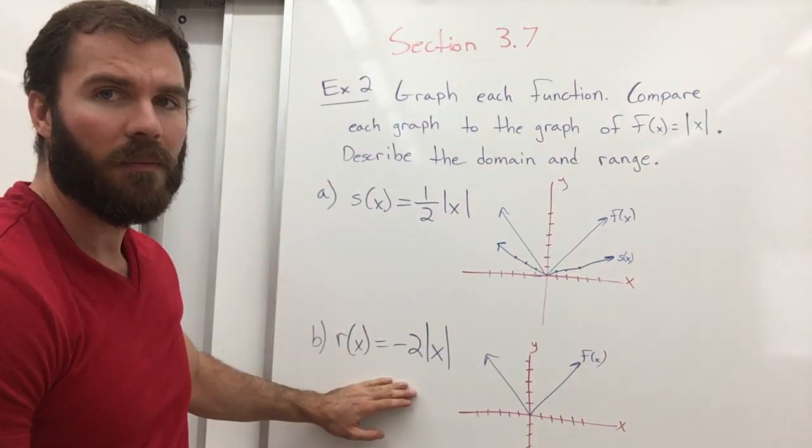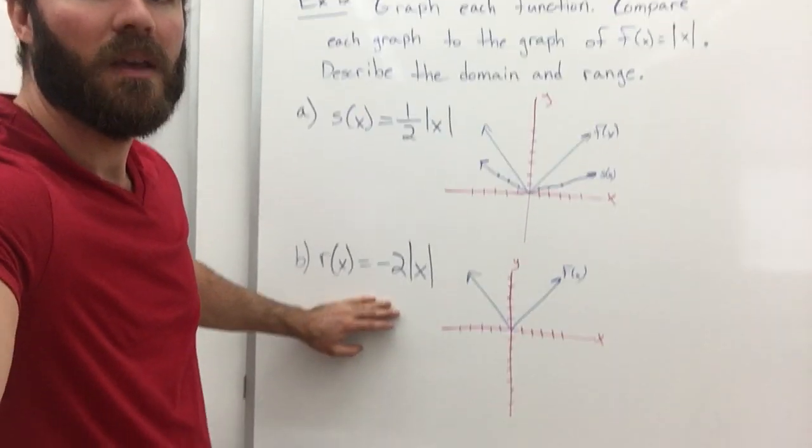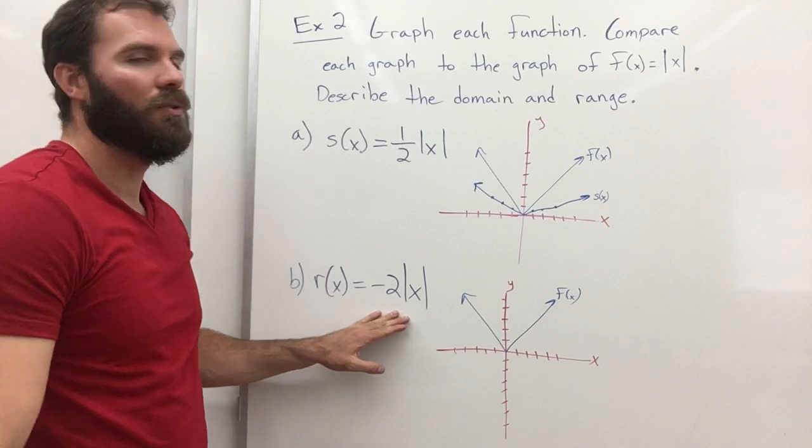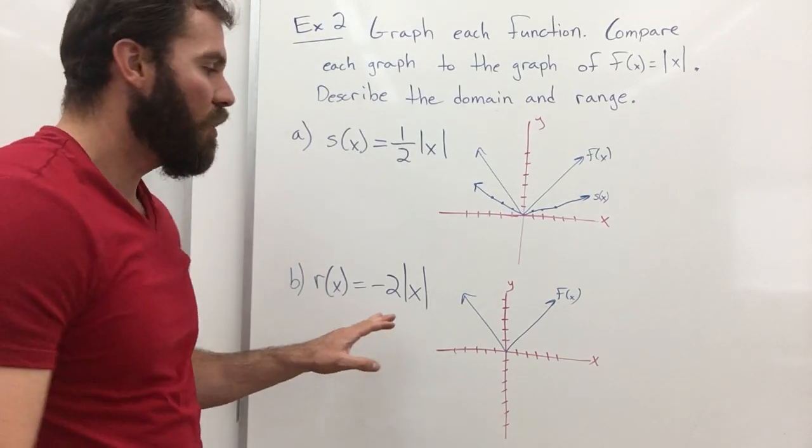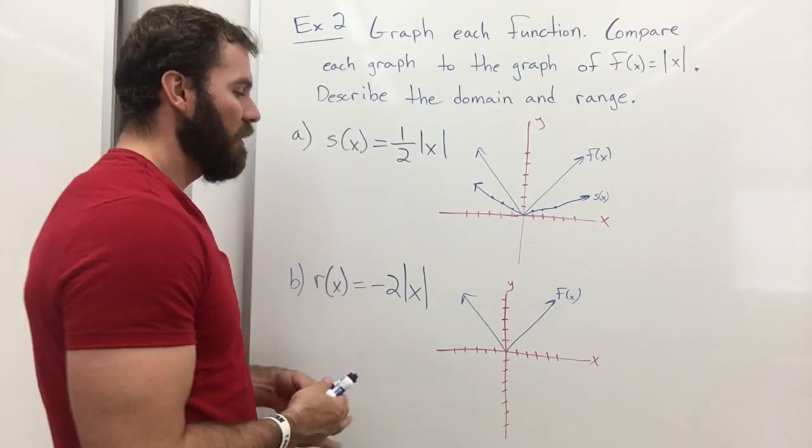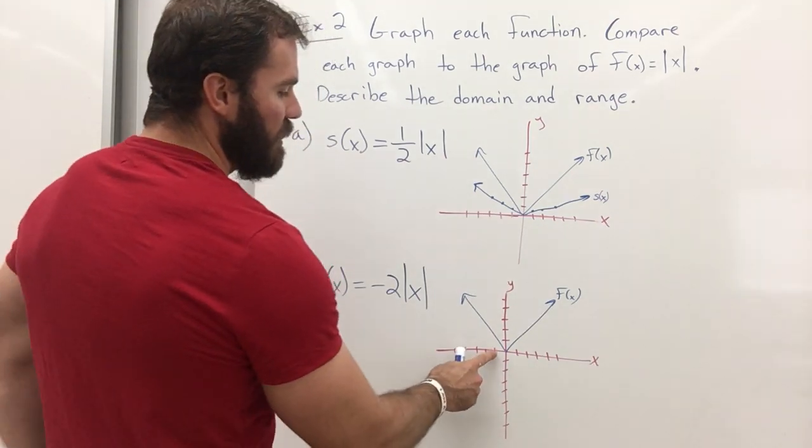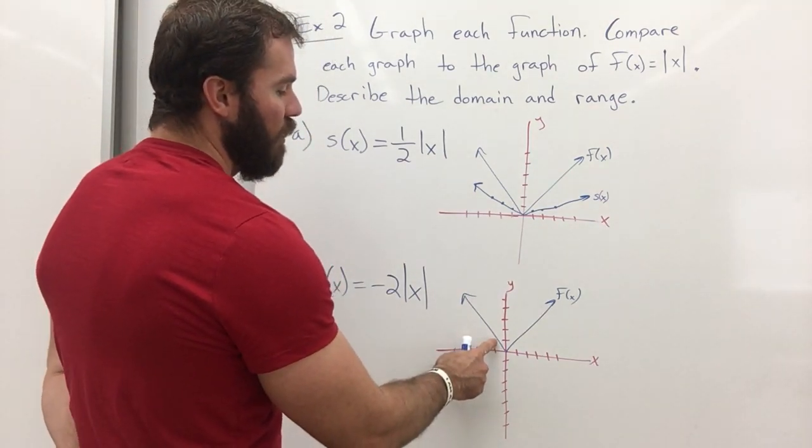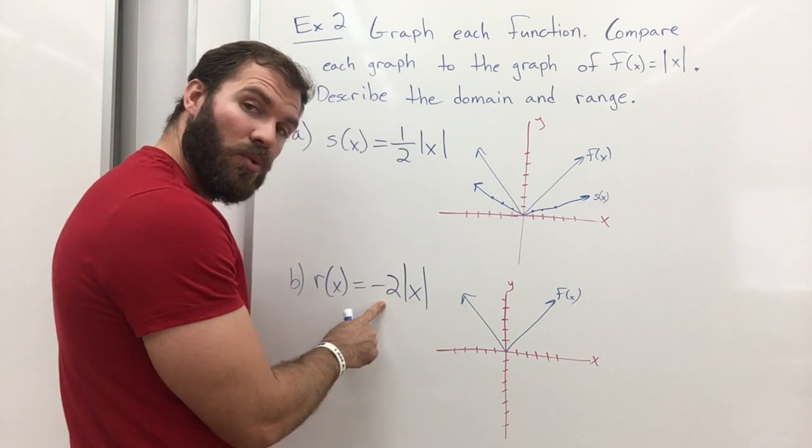Now for part b, we have a negative 2 in the front. So first off, we know that when x is 1, y is 1. Well, what if I multiplied it by a negative 2?